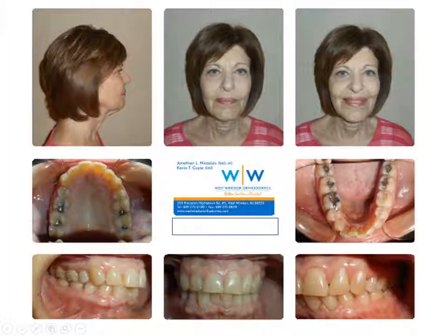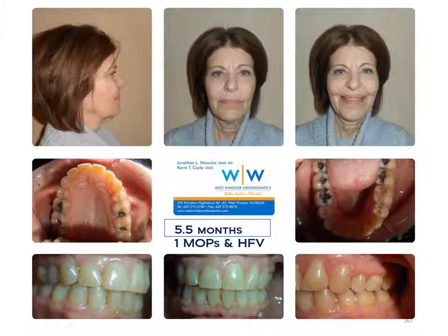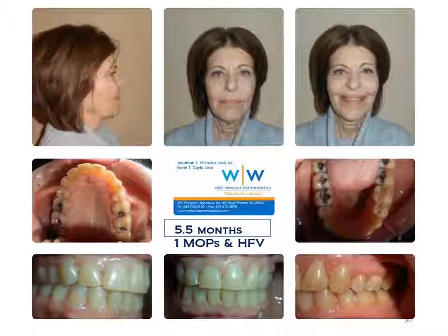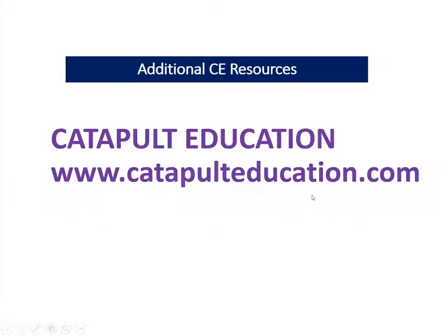Next patient — one Mops, VPro5 to alleviate crowding. Done in five and a half months, saw the patient maybe three times — profitability per visit has a comma in it. With that I'd like to thank you for your attention. Please visit the website to get your CE credits.